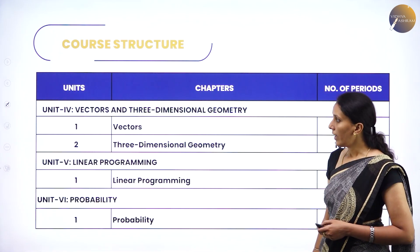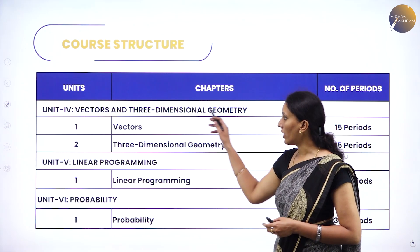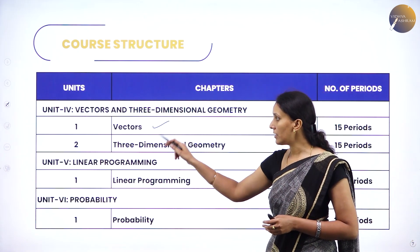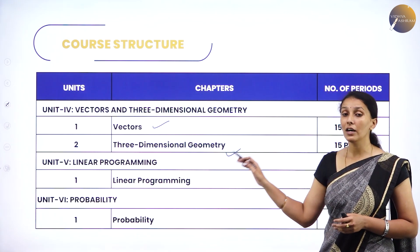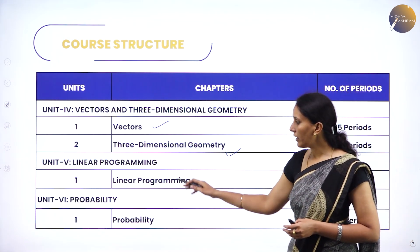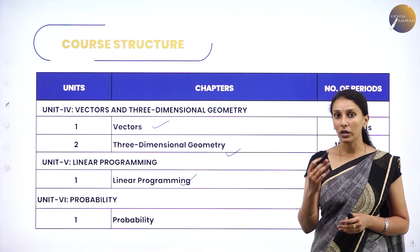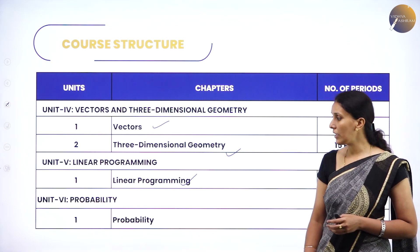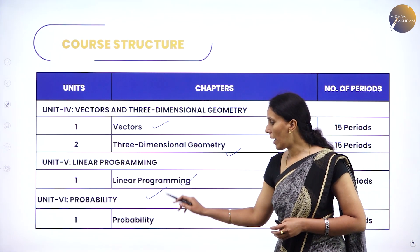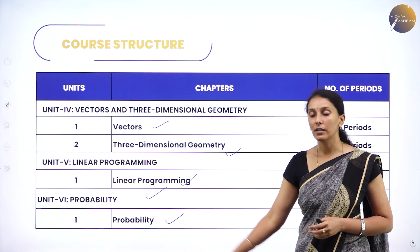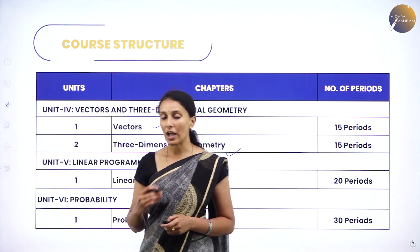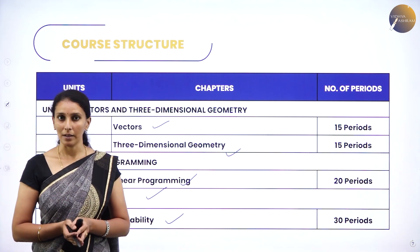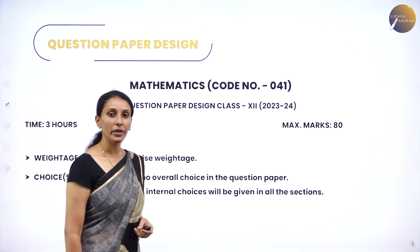From the unit Vectors and Three-Dimensional Geometry, you will learn about Vectors and Three-Dimensional Geometry — specifically about lines. From Linear Programming, you will learn what linear programming is and solve related problems. Then Probability covers advanced concepts related to probability. In total, there are 13 chapters in the syllabus.